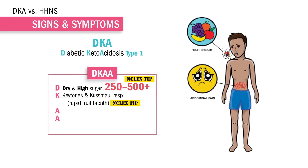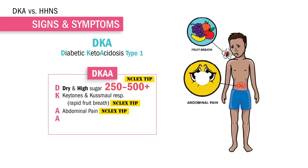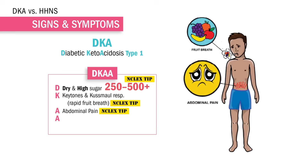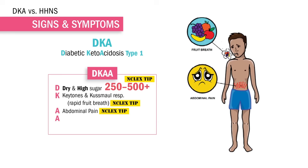Our A is for abdominal pain, which is a huge NCLEX tip. HHNS does not have abdominal pain — only DKA, typically on the NCLEX. And our last A is for acidosis — metabolic acidosis. Huge NCLEX key number here: pH 7.35 or less. This number will always show up on SATA questions.